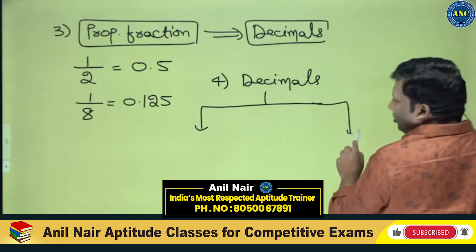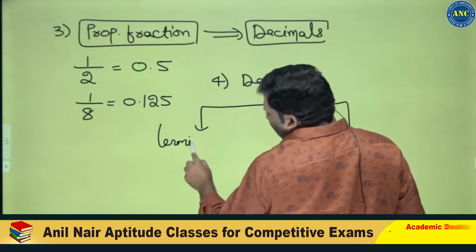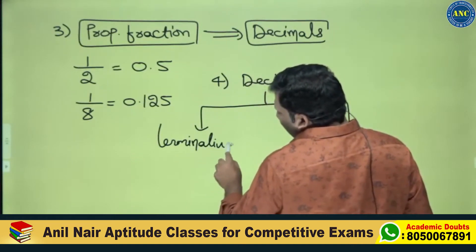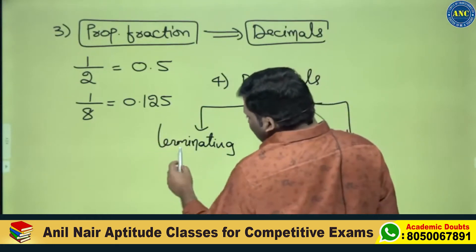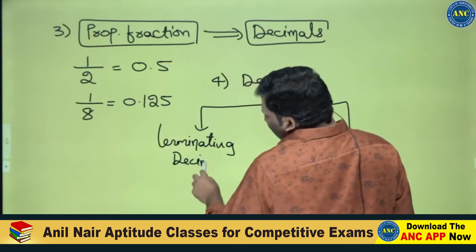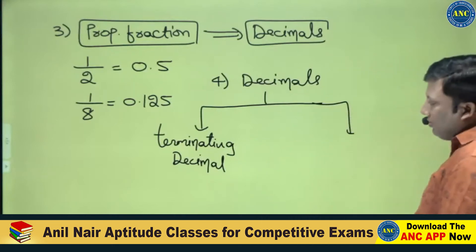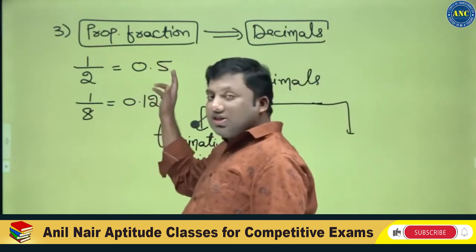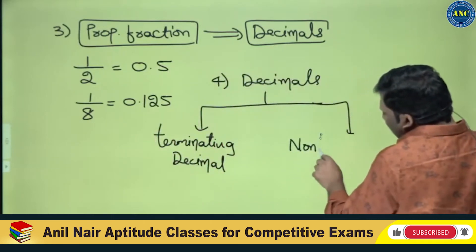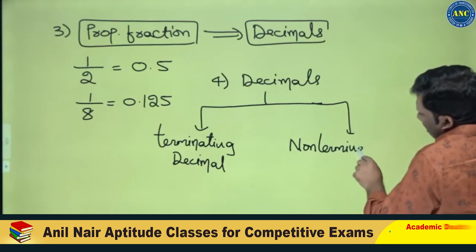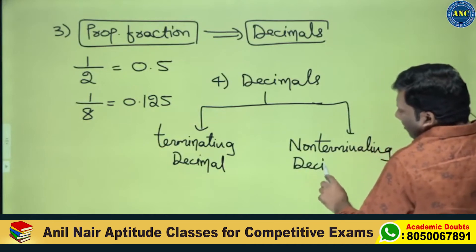Fourth important key point: there are two kinds of decimal values that can come when a fraction is converted into a decimal. The first is a terminating decimal — 'terminating' means it ends. After the dot, the digits will end. If the decimal is not ending, then it is called a non-terminating decimal.